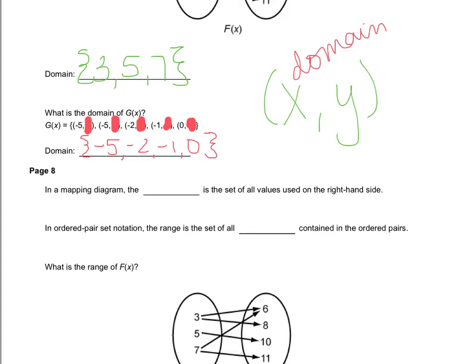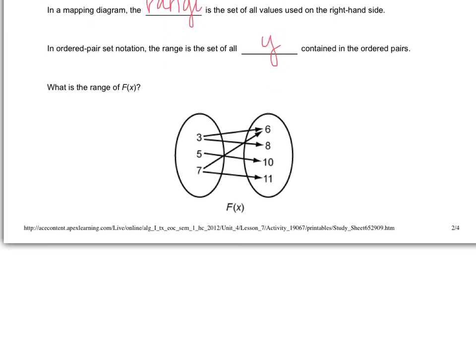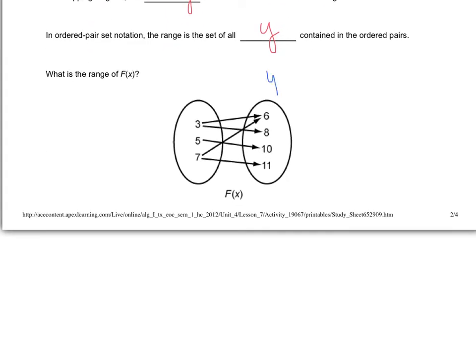In a mapping diagram, the range is the set of all values on the right-hand side. In ordered pair notation, the range is all of the y's. For the range of f(x), the numbers in our range would be six, eight, ten, and eleven — those are the only numbers — so we put fancy brackets around it.